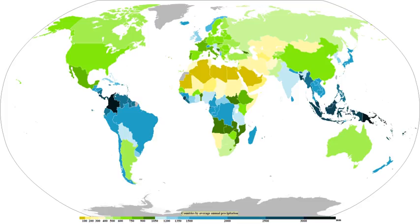The dew point is the temperature to which a parcel must be cooled in order to become saturated and condenses to water. Water vapor normally begins to condense on condensation nuclei such as dust, ice, and salt in order to form clouds. An elevated portion of a frontal zone forces broad areas of lift, which form cloud decks such as altostratus or cirrostratus.